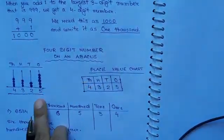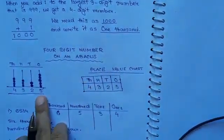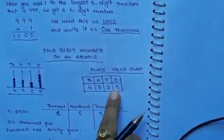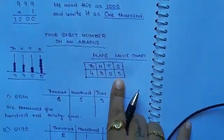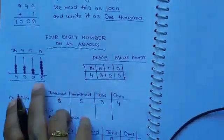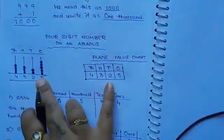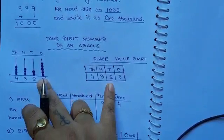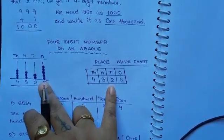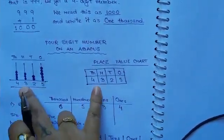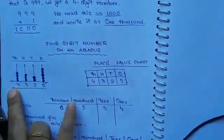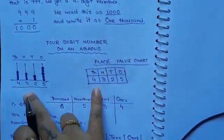The number 5 can be written in the ones place. The number 2 goes in the tens place. 3 in hundreds place. 4 in thousands place.